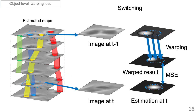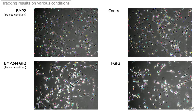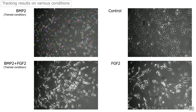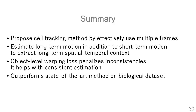This shows tracking results of our method on various conditions, and our results look accurately tracked. In the quantitative evaluation, our method outperforms state-of-the-art methods on target effectiveness. In summary, we propose a cell tracking method that effectively uses multi-frame context through long-term estimation and object level warping loss. We demonstrate our method's effectiveness on a public biological dataset and achieve state-of-the-art performance. Thank you for watching.